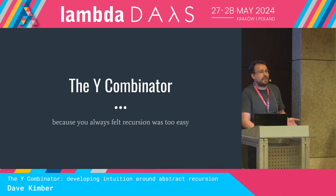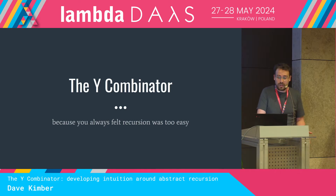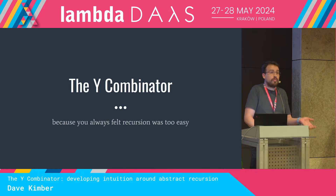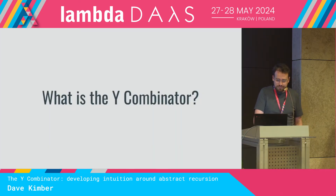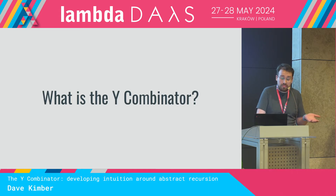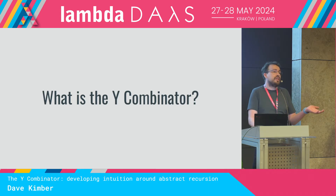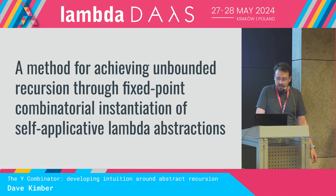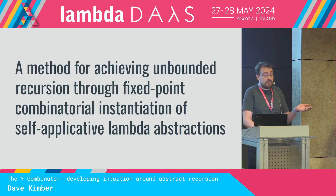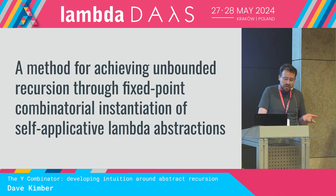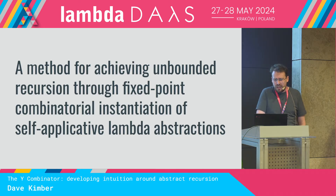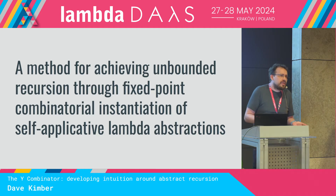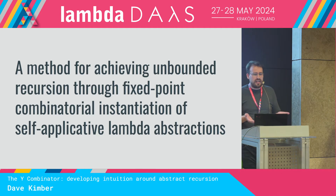Today we're going to take a look at the Y Combinator. We're going to look at what it is, what problem it solves, and hopefully we'll develop some intuition as to how it works underneath. A sensible place to start is just looking at the definition: it's a method for achieving unbounded recursion through fixed-point combinatorial instantiation of self-applicative lambda abstractions. That's thorough, but not terribly enlightening.